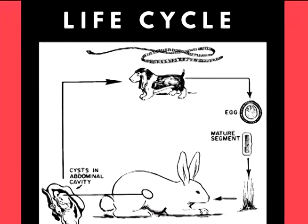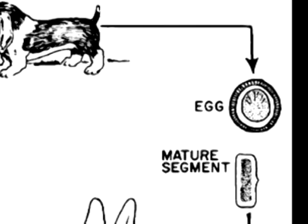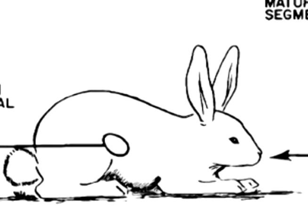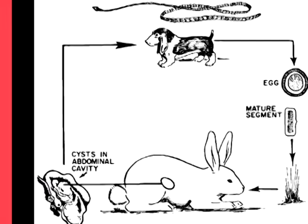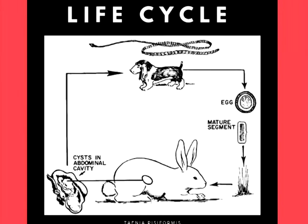Now we will move on to its life cycle. The definitive host, typically dogs, pass the egg-laden proglottid phase in their feces. The eggs are then ingested by a rabbit or any member of the leporidae family. Once ingested, the egg hatches and the hexacanth embryo enters the wall of the intestine and migrates to its organ of choice via the portal veins.